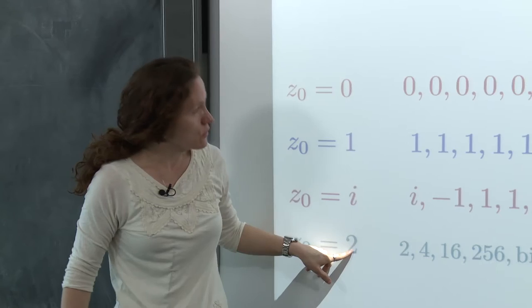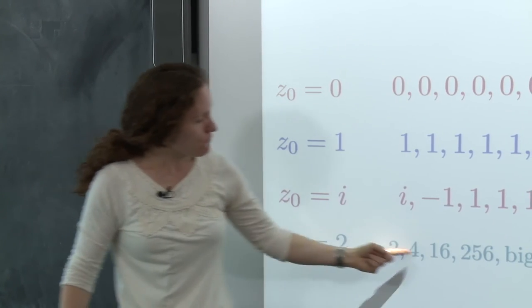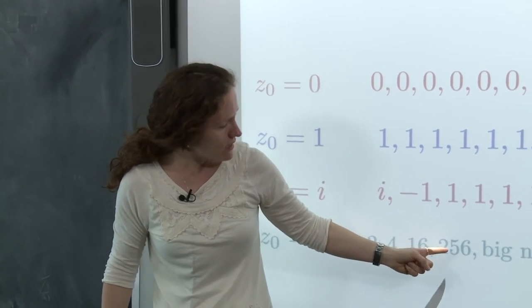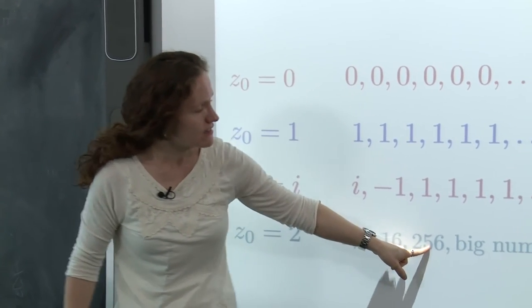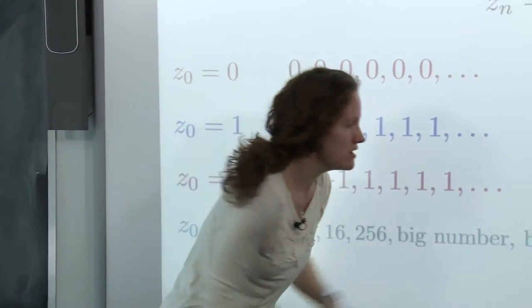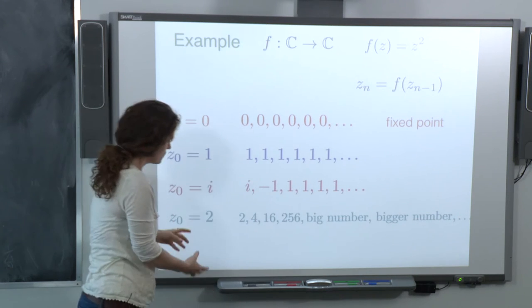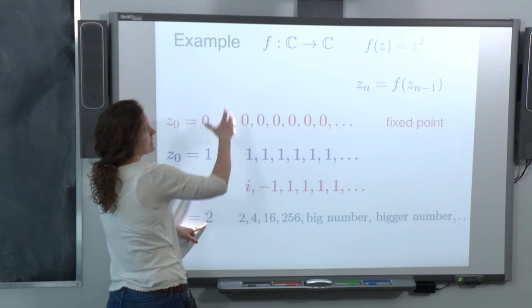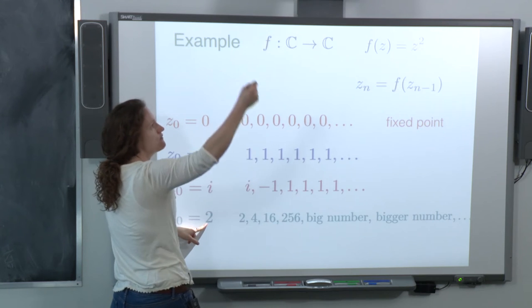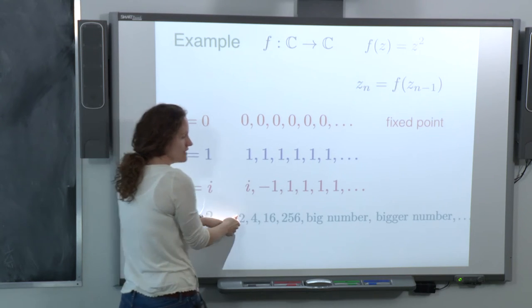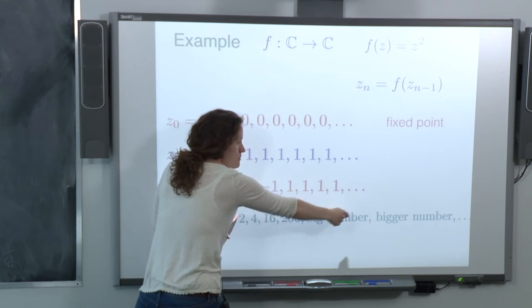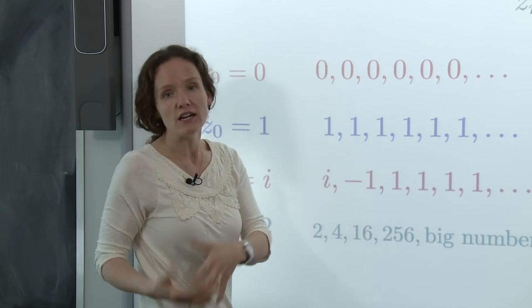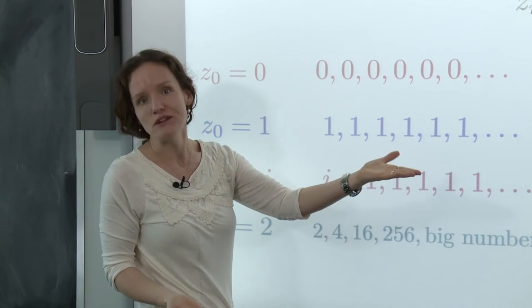What if we take 2? We square it and get 4, square that and get 16, square that and get 256, then a big number, then a bigger number, then an even bigger number. If you start with 2 and repeatedly feed the output back into the function, you get a sequence that gets bigger and bigger and shoots off to infinity.